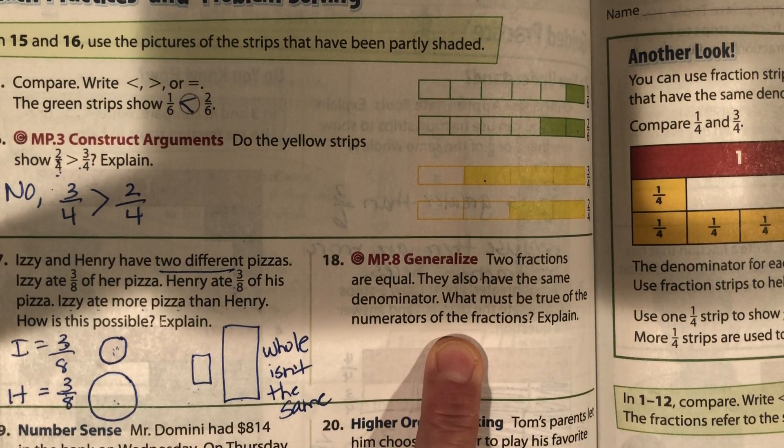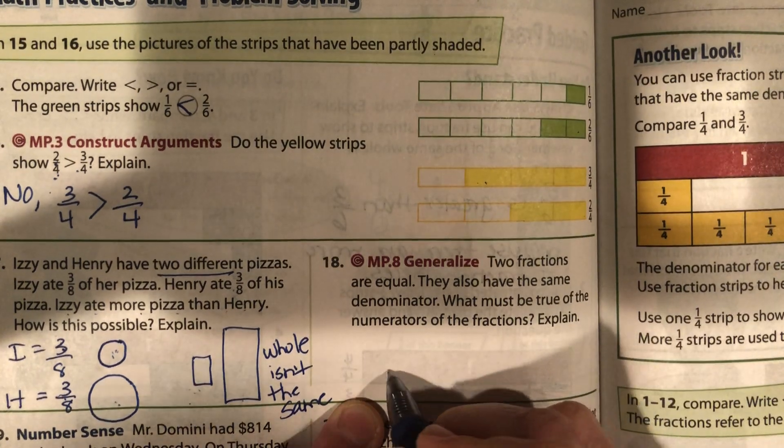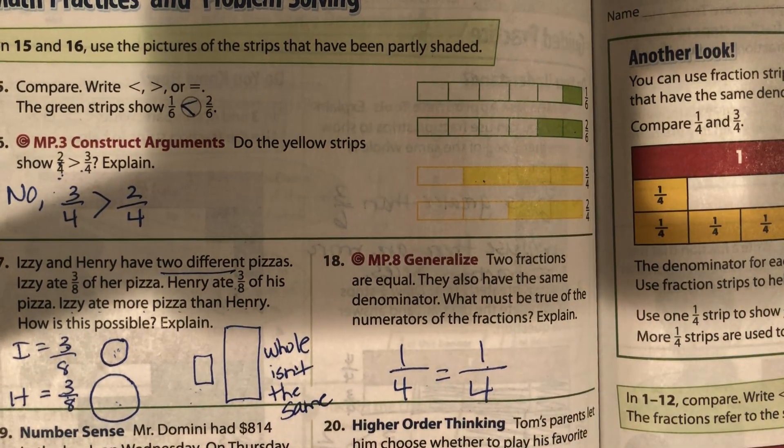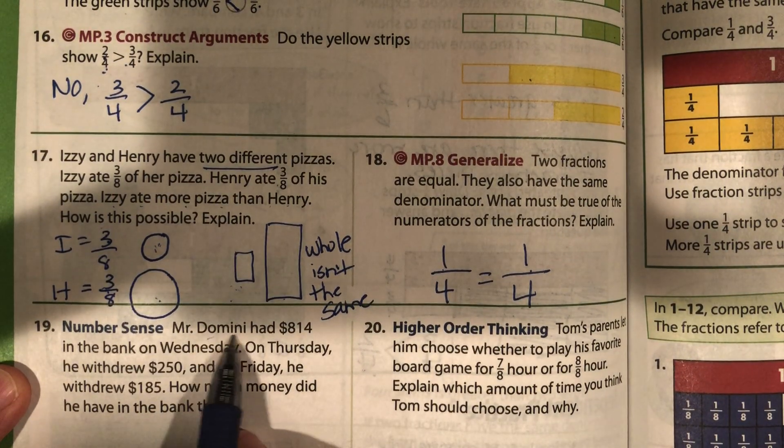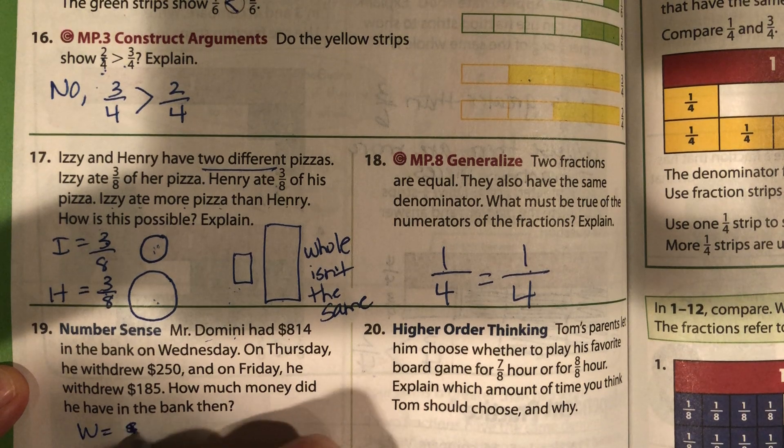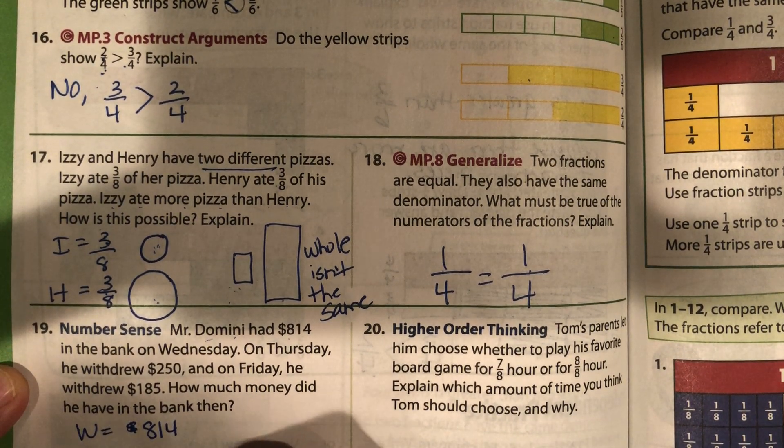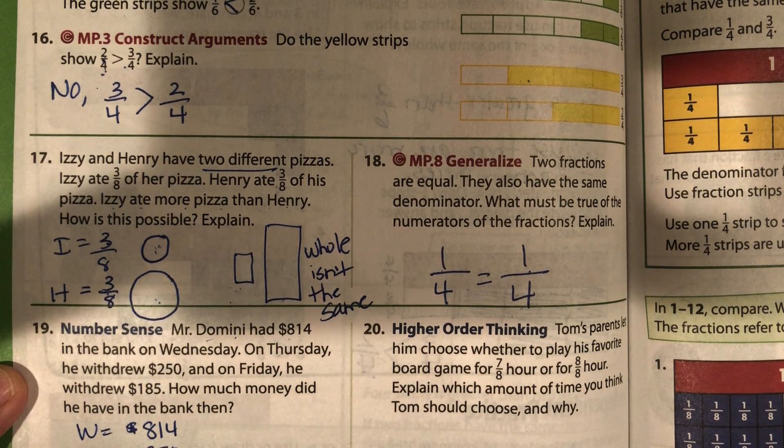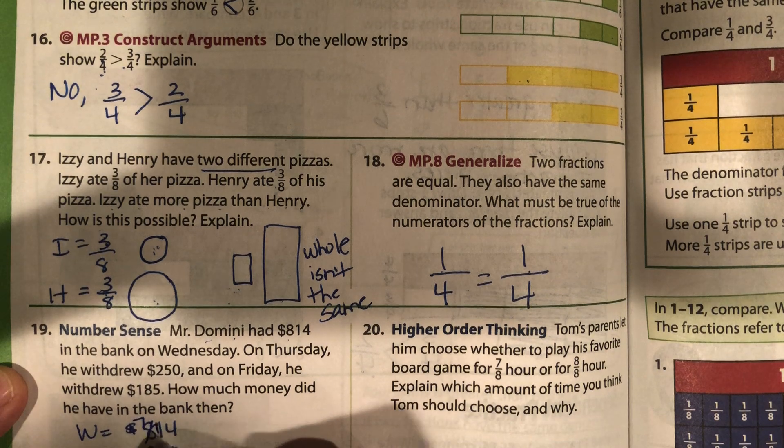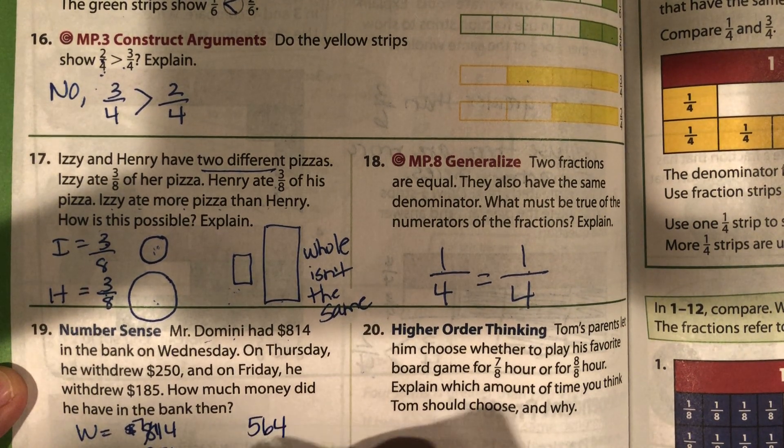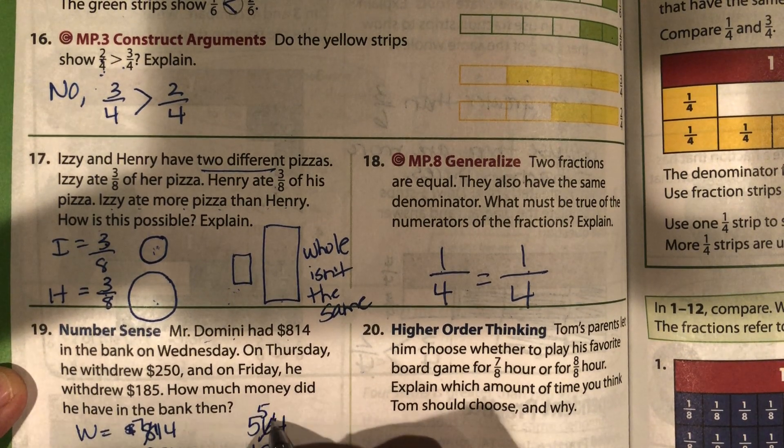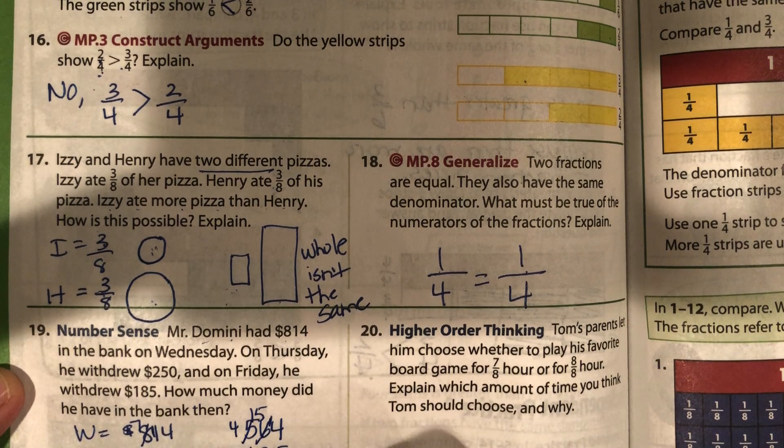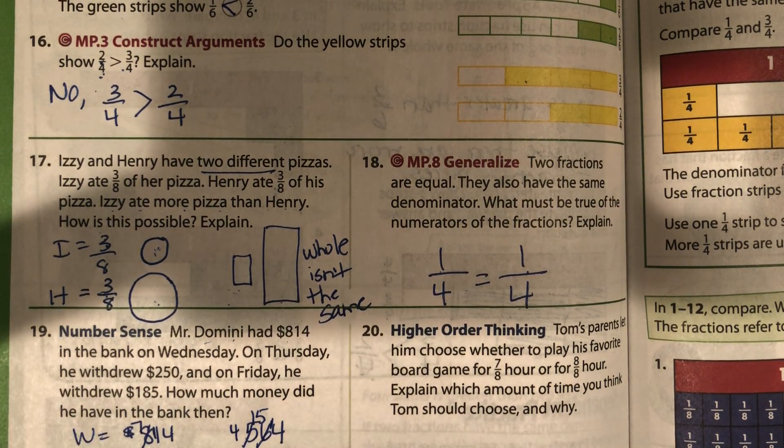Two fractions are equal. They have the same denominator. What must be true of the numerators? If they're equal, the numerators must be the same. So you would write that the numerators are the same. Mr. Domini had $814 on Wednesday. On Thursday, he withdrew $250. And then on Friday, he withdrew another $185. So let's subtract what he has there. He has $564 left and he subtracted an additional $185, so he should have $379 left in the bank.